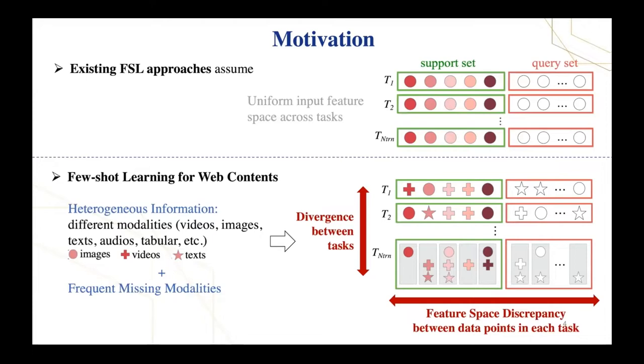A problem of using existing meta-learning approaches in web domain is that they assume a well-defined uniform few-shot setting where all tasks have identical feature space. This limits their applicability in heterogeneous web content, where data is more complex, multimodal, and non-identically distributed.